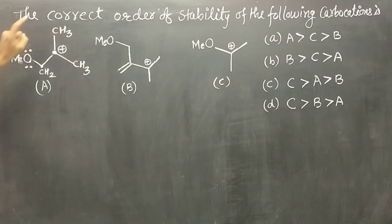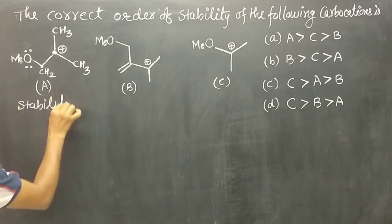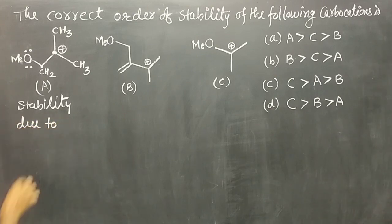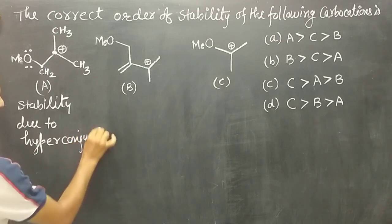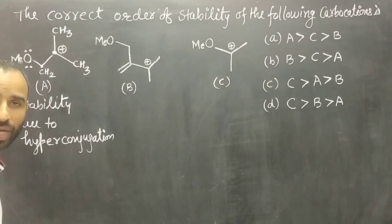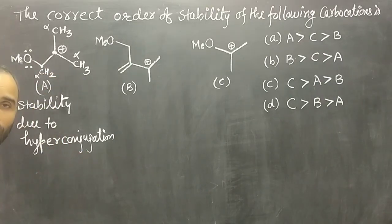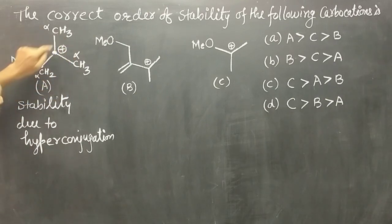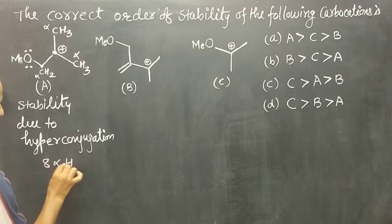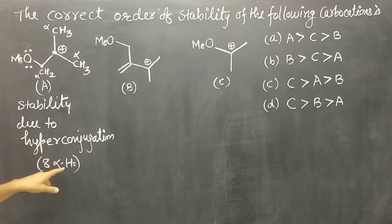So only alkyl groups — these carbon atoms along with hydrogen — are involved. Stability is due to hyperconjugation. How many hydrogens are involved in hyperconjugation? These are alpha, alpha, alpha. Hyperconjugation is proportional to alpha hydrogens — not alpha carbons, alpha hydrogens. Total alpha hydrogens are 3 plus 3 is 6, plus 2, so hyperconjugation is due to 8 alpha hydrogens. This carbocation is stabilized by 8 hyperconjugated resonating structures.